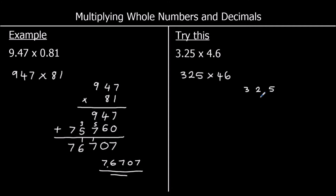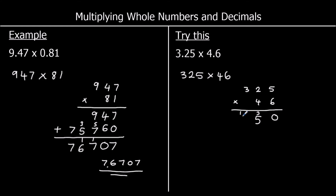So 325 times 46. We do 6 times 325 and then 40 times 325 and add them up. 6 times 5 is 30 — 0 in the ones, carry 3. 6 times 2 is 12 plus 3 is 15 — 5 in the tens, carry 1. 6 times 3 is 18 plus 1 is 19 — 9 in the hundreds, carry 1 into the thousands.